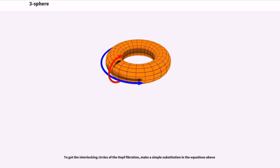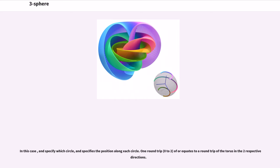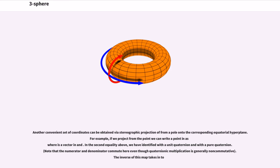To get the interlocking circles of the Hopf fibration, make a simple substitution in the equations above. In this case, and specify which circle, and specifies the position along each circle. One round trip of equates to a round trip of the torus in the two respective directions.